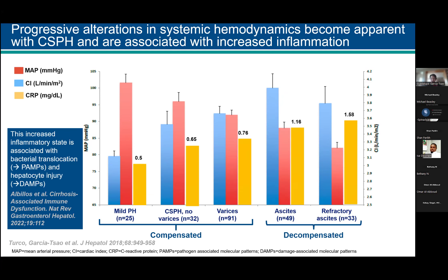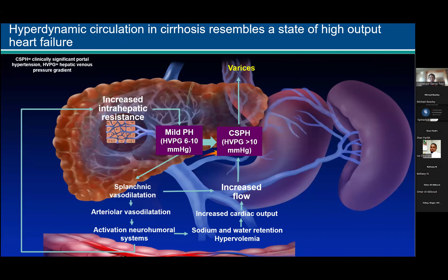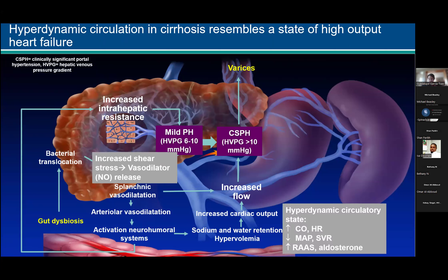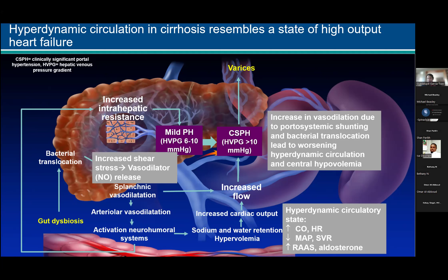This increased inflammatory state is associated with bacterial translocation — a covert infection that increases PAMPs, the pathogen-associated molecular patterns — but also ongoing hepatocyte injury increases DAMPs. This whole process is called cirrhosis-associated immune dysfunction, which leads to this inflammatory state and circulatory dysfunction. So you've seen this hyperdynamic circulation in cirrhosis resembling high output heart failure: dysbiosis leads to bacterial translocation, splanchnic vasodilation, increased shear stress, NO release, and worsening hyperdynamic circulation with central hypovolemia.